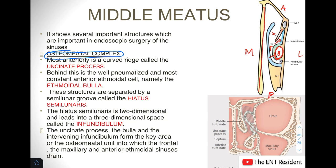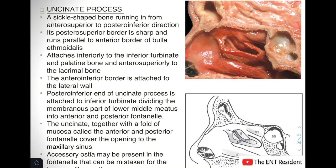The uncinate process, the bulla, the hiatus semilunaris, and the infundibulum form the ostiomeatal complex, where the frontal, maxillary, and anterior ethmoidal sinuses drain into. You can see this region in the picture as the ostiomeatal complex. We will now discuss each structure in turn.